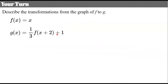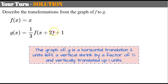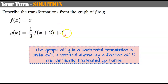Try this one. Go ahead and pause, write down your description, and come back to check it. Welcome back. First, inside the parentheses, the graph of g is a horizontal translation two units to the left because this would be negative two. Then going outside, we have a vertical shrink by a factor of one third. And it has also been vertically translated up one unit.